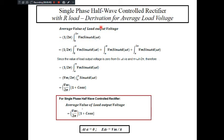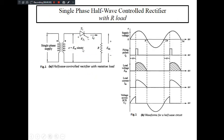The derivation for average load voltage is frequently asked in exams. For the average value of load output voltage, we consider one full cycle. We can divide the full cycle into three parts: from 0 to α (before firing pulse), from α to π (SCR T1 is on), and from π to 2π (negative half cycle). During the first part (0 to α) and the last part (π to 2π), our SCR T1 is totally turned off, so those terms become zero. Only the middle term, from α to π, remains.